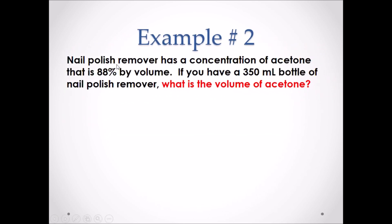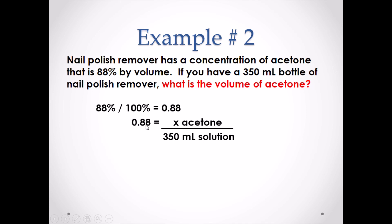Example 2: Nail polish remover has a concentration of acetone that is 88% by volume. If you have 350 milliliters of nail polish remover, what is the volume of acetone? We convert 88% to the decimal 0.88, which equals the volume of acetone divided by the total solution volume. Rearranging: volume of acetone equals 0.88 times 350 mL, giving 3.1 × 10² milliliters.